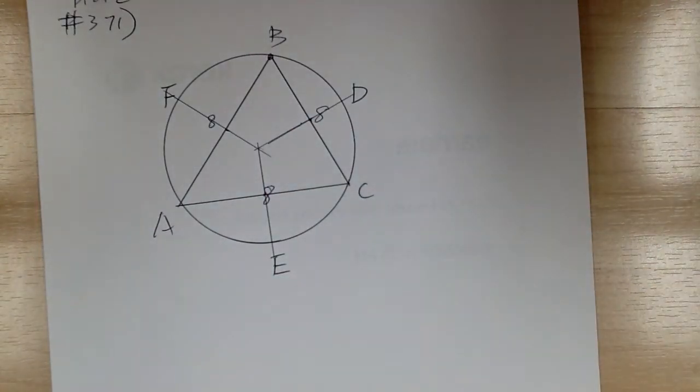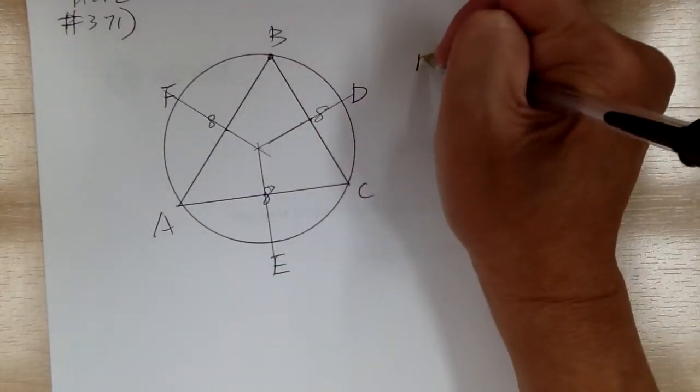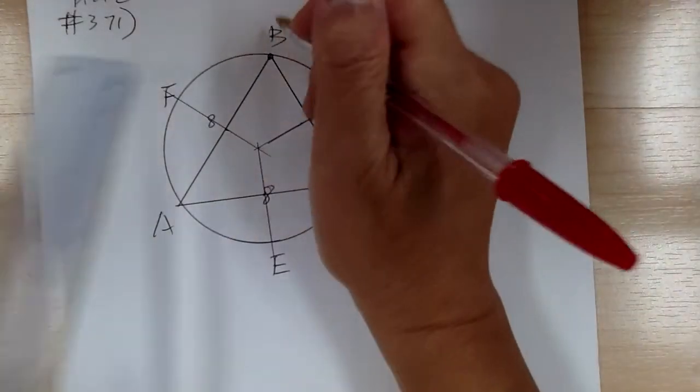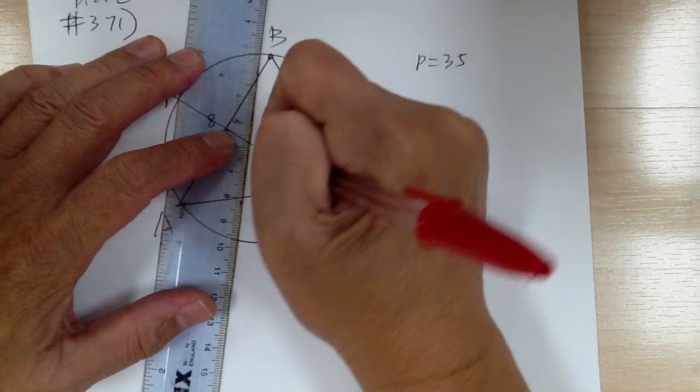So to do this, and also the perimeter is equal to 35. So what you want to do is go ahead and draw across the letters. So here's your center O.